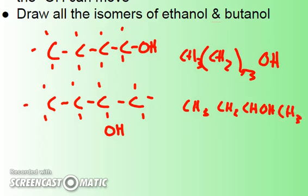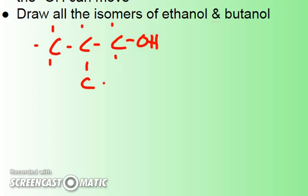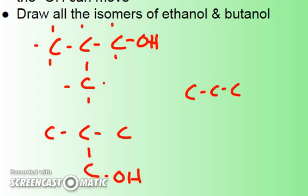We would name them differently: the first would be one-butanol and the second would be two-butanol. We also have another possibility in that the butyl chain, instead of being four in a row, could be three in a row with the fourth branching down. So now I have a possibility where the OH could be off of there, or the OH could be attached to that dangling carbon, or the third possibility is the OH could be attached to the center carbon, which is also where the branch is.